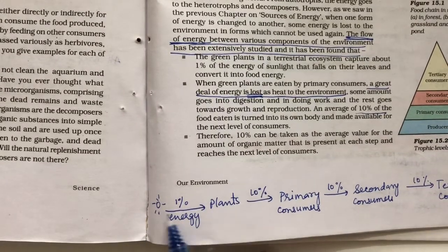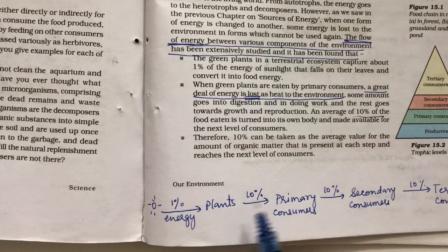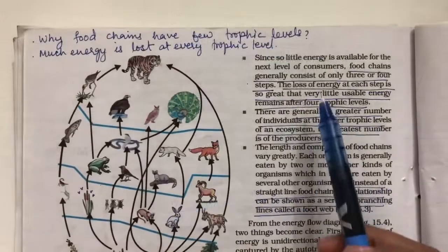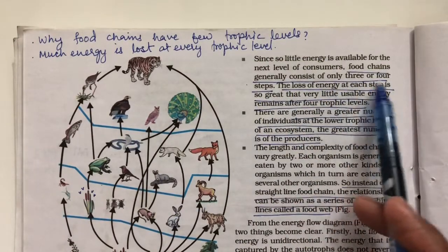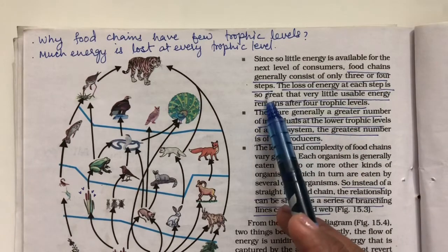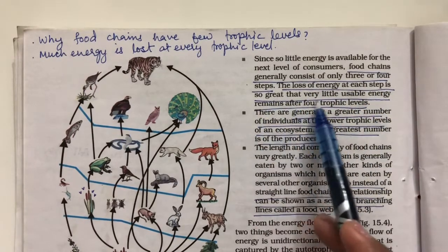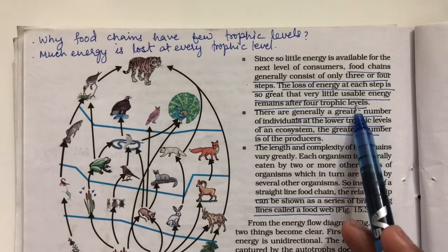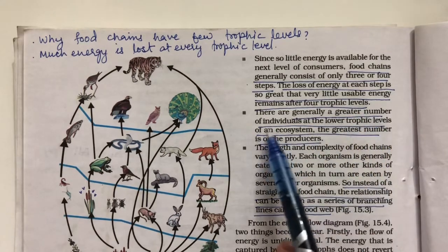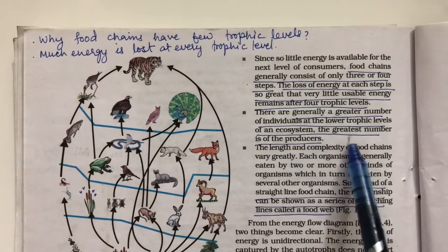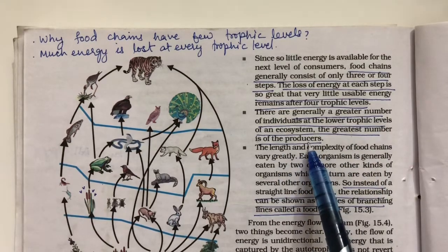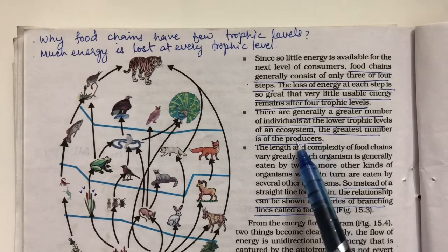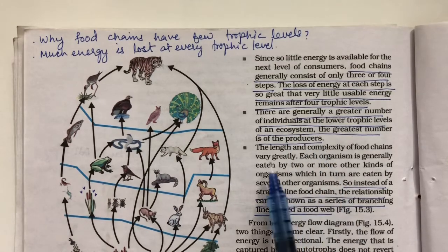Since only 10% of energy transfers to the next trophic level — called the 10% energy law — food chains generally consist of only three or four steps. The loss of energy at each step is so great that very little usable energy remains after four trophic levels. There are generally a greater number of individuals at lower trophic levels, with producers being most numerous.